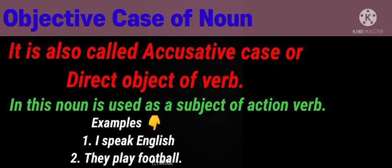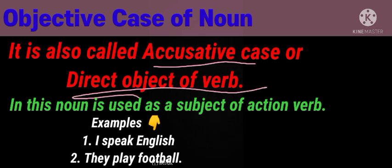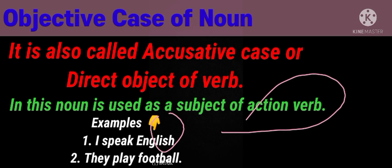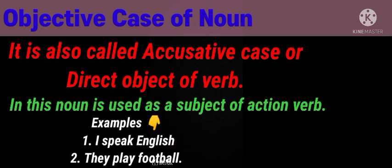It is also called an objective case or direct object of a word. A noun is used as the subject of an action verb — the pattern is action verb plus noun. For example, 'I speak English.' Here, English is a noun, speak is a verb, and I is the subject.